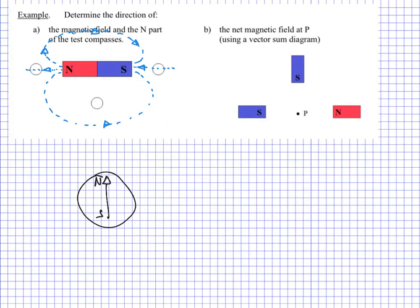So what does that mean for our compass? Our compass is a mini bar magnet, and the mini bar magnet is going to want to align itself in the lowest energy state. In other words, the north is going to be attracted to the south, and the south is attracted to the north. The compass on the right side - the northern end of that compass is going to point towards the south end of the bar magnet. And over here on the left side, the compass is going to point away from the bar magnet, because the south side of the compass is going to be attracted to the north pole of the magnet. This is the lowest energy state that these magnets can be in.